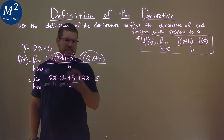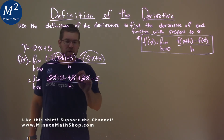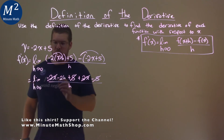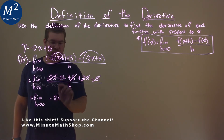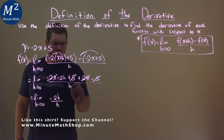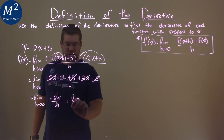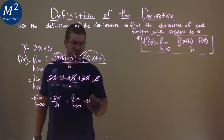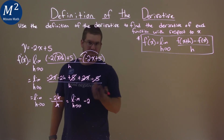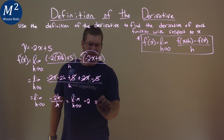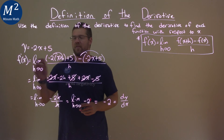Now, if you look at the numerator, we actually see items that cancel out. Our negative 2x cancels out with the positive 2x, and our 5s cancel as well. So we're left with the limit as h approaches 0 of just negative 2h over h. The h's cancel, and so now we're taking the limit as h approaches 0 of negative 2. When we take that limit, there's no h, so that just equals negative 2, which is equal to our dy/dx, or our f prime of x.